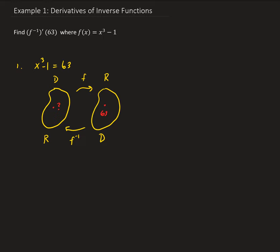So we can go ahead and solve for that. We're going to have x cubed minus 1 equals 63, so x cubed equals 64. Take the cube root of both sides. The cube root of 64 is 4, so we have the value of 4. So 4 gets mapped to 63.